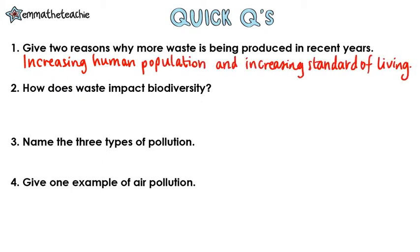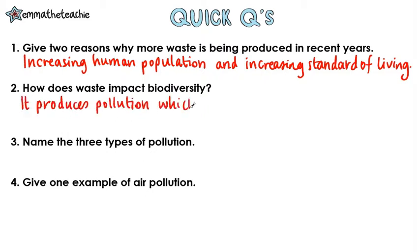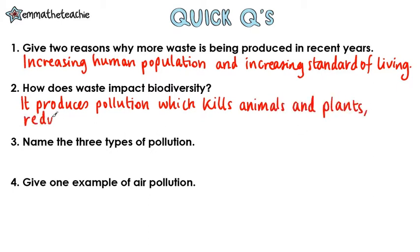Question 2: How does waste impact biodiversity? There are two parts to your answer — we need to give the mechanism and then the impact on biodiversity. Waste will produce more pollution, which will kill animals and plants — that's the mechanism. Reducing biodiversity — that's the impact.